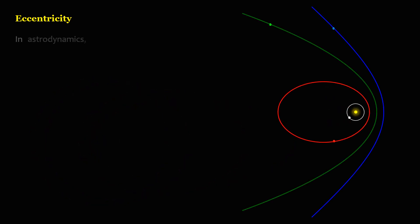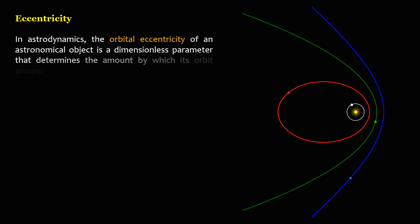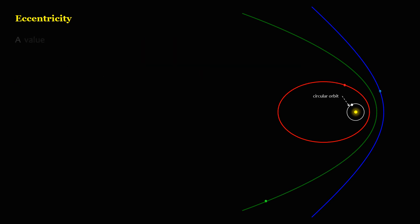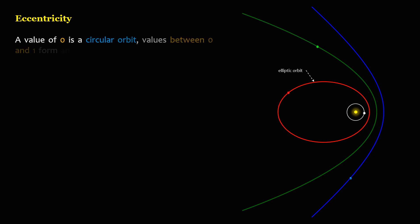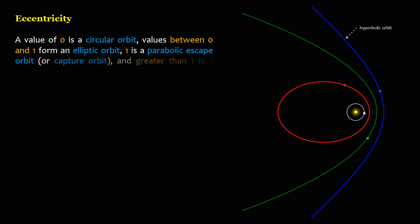In astrodynamics, the orbital eccentricity of an astronomical object is a dimensionless parameter that determines the amount by which its orbit around another body deviates from a perfect circle. A value of zero is a circular orbit, values between zero and one form an elliptic orbit, one is a parabolic escape or capture orbit, and greater than one is a hyperbola.